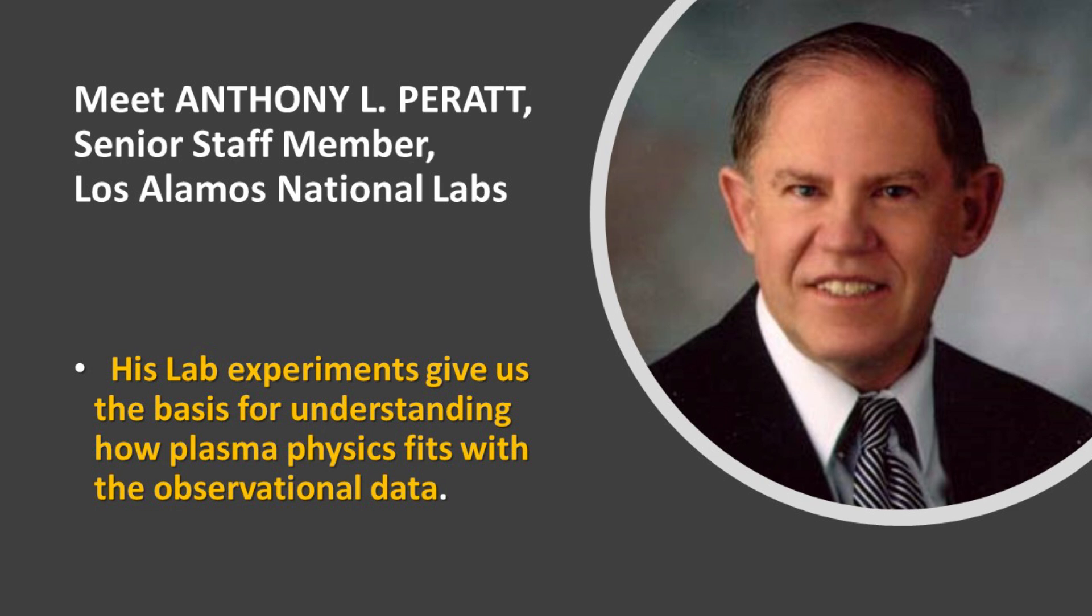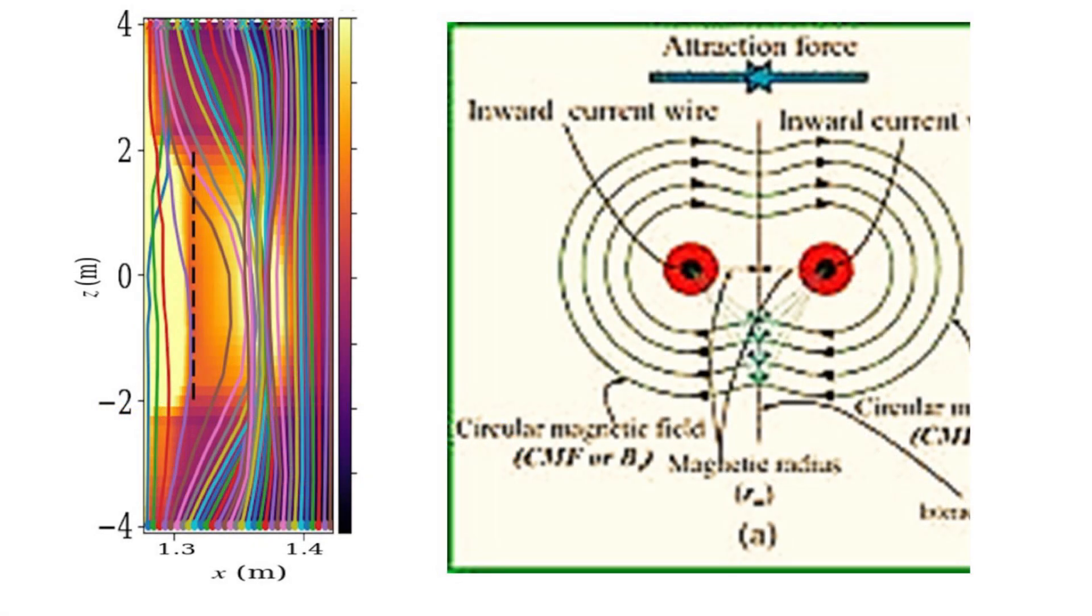Meet Anthony L Peratt, senior staff member, Los Alamos National Laboratories. His lab experiments gave us the basis for understanding how plasma physics fits in with the observational data for galaxy formation. To begin, the image on the left is a photograph of plasma filaments in an experimental tube. Note that about a dozen different filaments on the left sector are being attracted to each other. The reason why can be demonstrated by two parallel wires with electric currents which go in the same direction, as shown on the right. When currents in wires or plasma filaments are in the same direction, the wires or filaments attract each other. This happens because the circling magnetic fields reinforce. If the electric currents were in opposite directions, the filaments, wires and magnetic fields would repel.